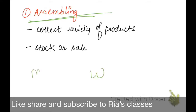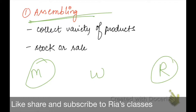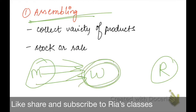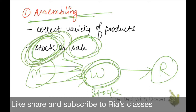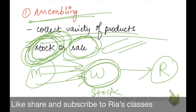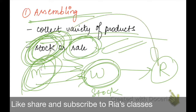The first important function of a wholesaler is assembling. The wholesaler buys everything from the manufacturer and stocks up, collecting a variety of products from the manufacturer, which will ultimately be given to the retailer, and from the retailer to the customer.